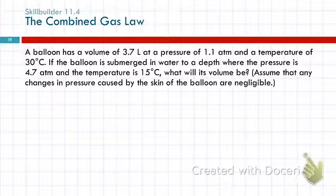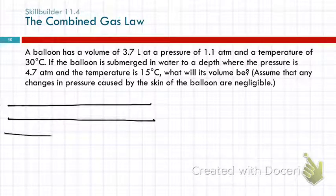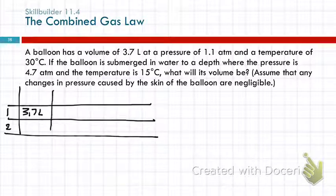Same strategy. Make a table, find the numbers, and put them in the table. First number, 3.7 liters. That's a volume. Label that column volume. 3.7 liters at 1.1 atmospheres. That's a pressure. And 30 degrees Celsius. Change that to Kelvin. 273 plus 30 is 303 Kelvin.